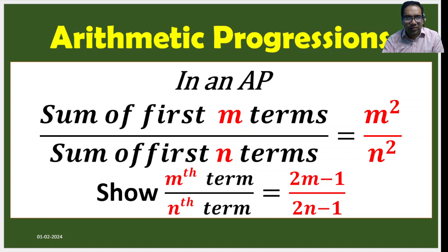Hi friends, let us do a nice problem. In an arithmetic progression, sum of first m terms by sum of first n terms is m² by n². Then m-th term by n-th term should be (2m-1) by (2n-1). This is what we have to prove.